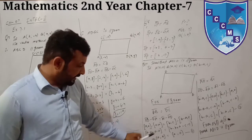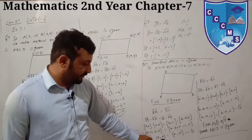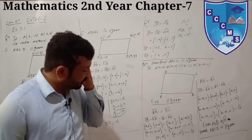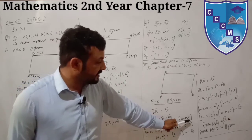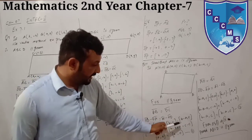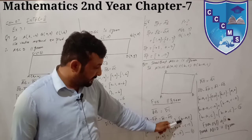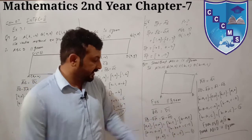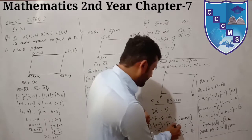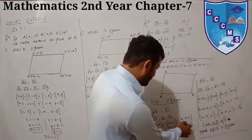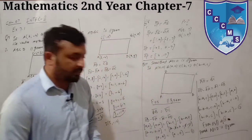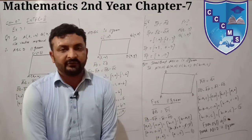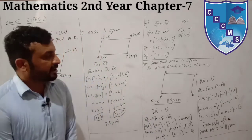Putting in the points: for AB, OB minus OA gives (a, 0) minus (0, 0) equals (a, 0). For DC, OC minus OD gives (b, c) minus (b minus a, c). Subtracting: b minus (b minus a) gives b minus b plus a equals a, and c minus c equals 0. So DC equals (a, 0). Both sides are equal - this is equation number 1.